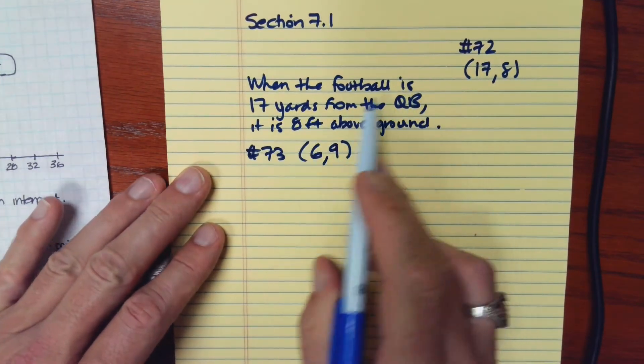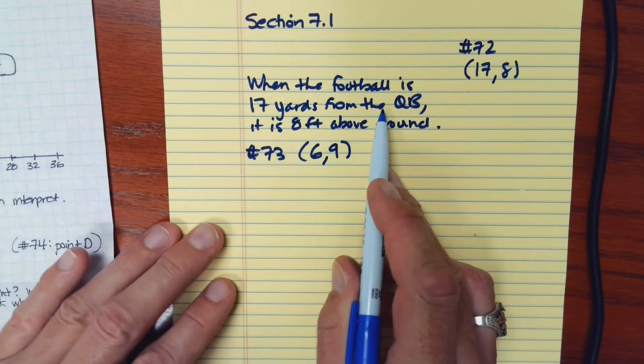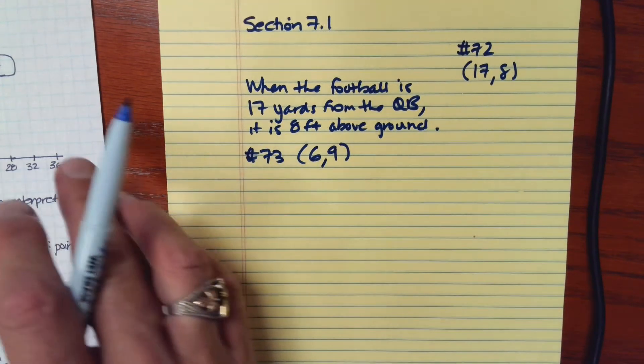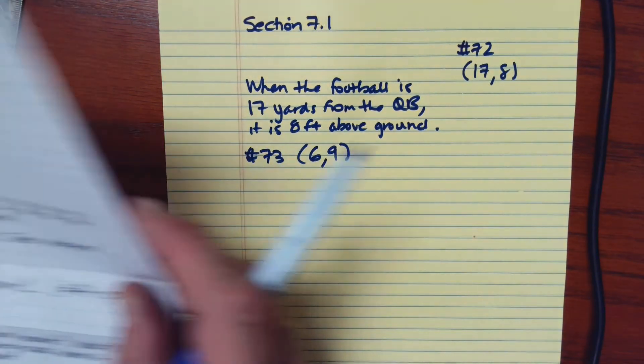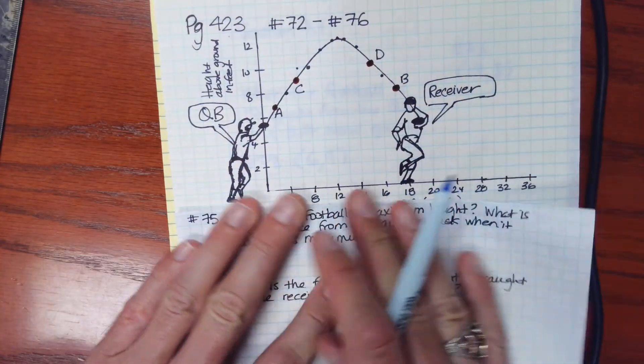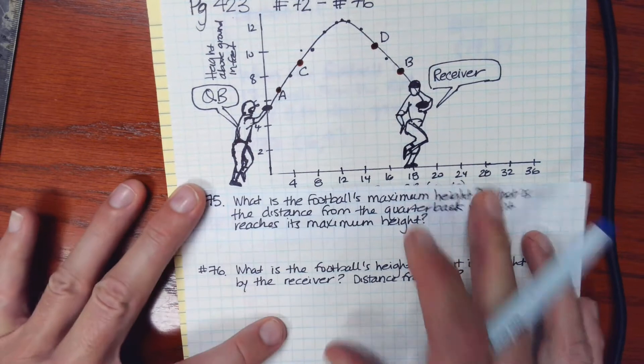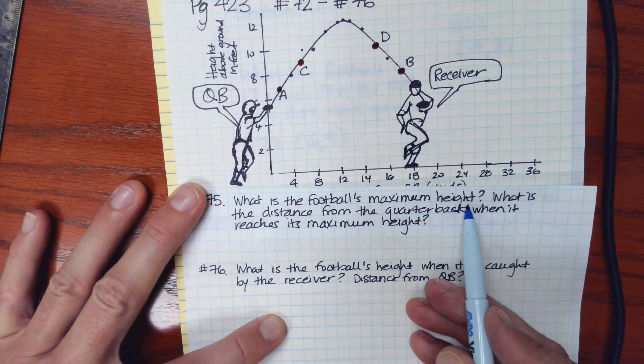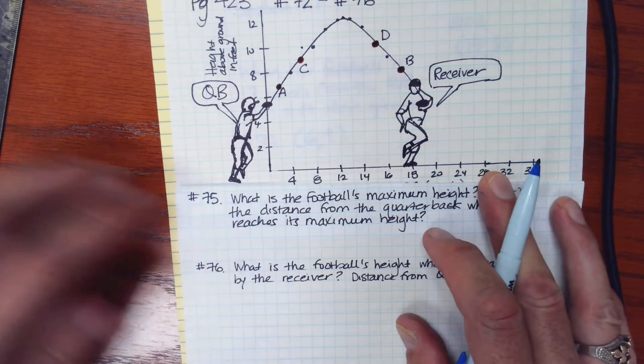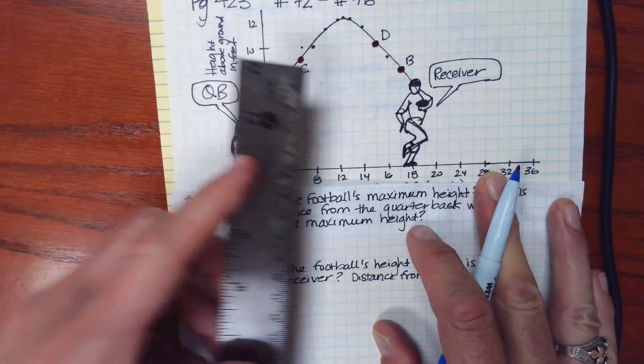So in this case, when the football is 6 yards from the quarterback, it is 9 feet above ground. I'm going to skip up to this next question. It says, what is the football's maximum height? And what is the distance from the quarterback when it reaches its maximum height?